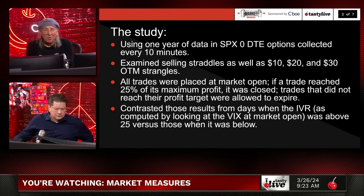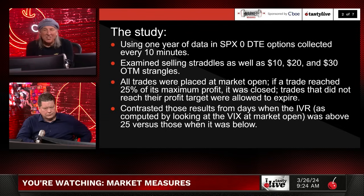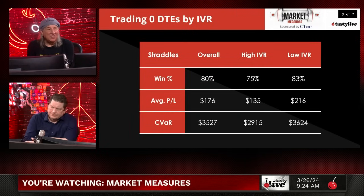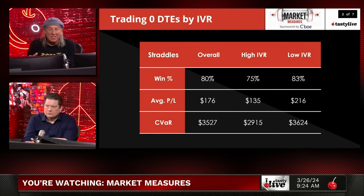All trades were placed at the market opening. Trades were closed when they reached 25% of max profit. Trades that did not reach their max profit were allowed to expire. We contrasted results when the IVR — computed by looking at the VIX at market open — was above 25 versus below 25. Starting with straddles: you sell the at-the-money put and at-the-money call. Zero DTE has been an unbelievable trade this year because everything has worked.